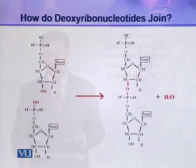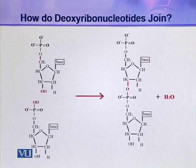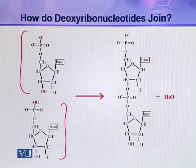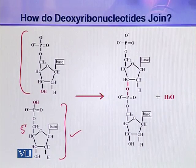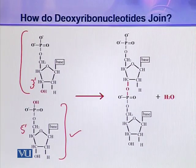How is this phosphodiester linkage formed, and what type of linkage is it? In this picture, you can see these two deoxyribonucleotides and how they are joined. The phosphate group is attached to the 5 prime carbon of the pentose sugar, and this phosphate is next attached to the 3 prime carbon of the next deoxyribonucleotide, where a hydroxyl group is present.